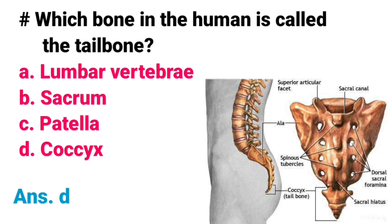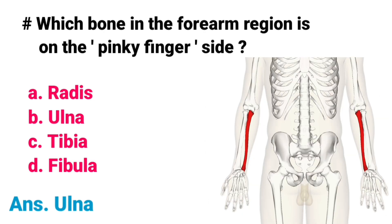Which bone in the human is called the tail bone? A) Lumbar vertebrae, B) Sacrum, C) Patella, D) Coccyx. Correct answer is option D, Coccyx. The coccyx bone in the human is called the tail bone.